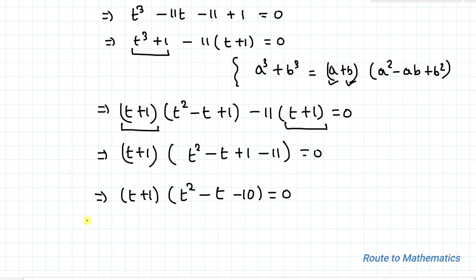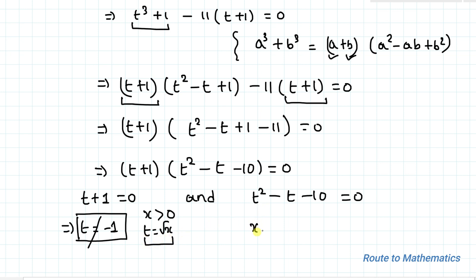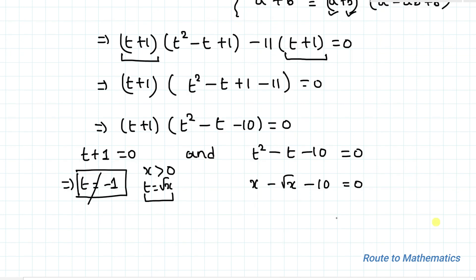Since x is greater than 0 and t equals √x, t cannot be negative, so t equals −1 does not satisfy the condition and is rejected. From the remaining factor t² − t − 10 equals 0, substituting t equals √x back gives x minus √x minus 10 equals 0, which implies x minus √x equals 10.